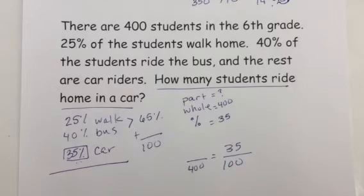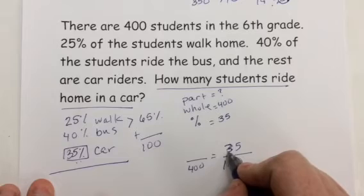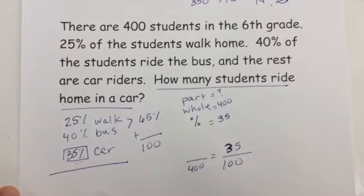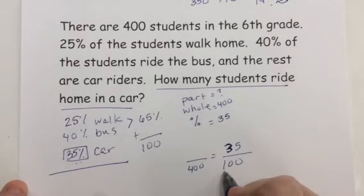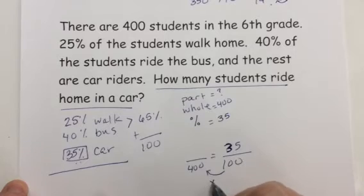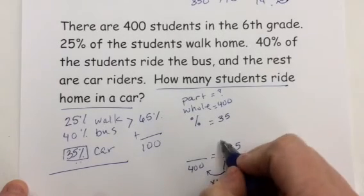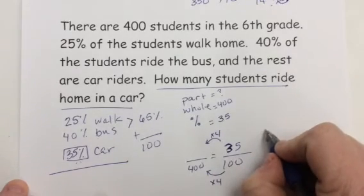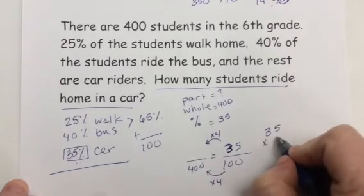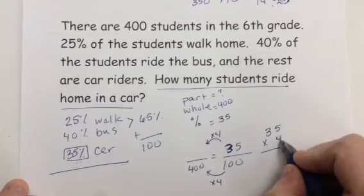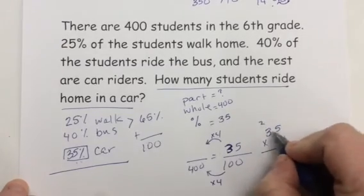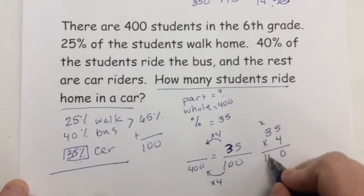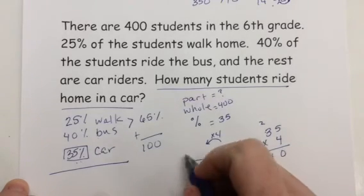Now that one's not too bad because I could cross multiply and divide. This says 35. Sorry, it's a little messy. But I could also use this scale factor here. 100 times 4 is 400. So 35 times 4. Well 35 times 4. 4 times 5 is 20. 4 times 3 is 12. Plus 2 is 14. That would be 140.